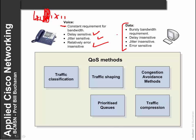Data, on the other hand, tends to be fairly bursty — it isn't constant and tends to go from low requirements to high requirements. It doesn't matter too much how long it takes, nor the variation in transmission time, but it is error sensitive. The key factors we will see in quality of service are to classify the traffic, shape it in some way, define prioritised queues for voice and data, try to avoid congestion before it happens, and try to compress different traffic flows.